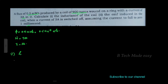For the inductance of the coil: L is equal to N times φ divided by I, that is 900 into 0.5 into 10 raise to minus 3 divided by 3. The value is 0.15 Henry.